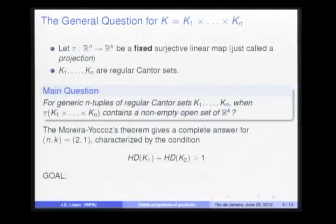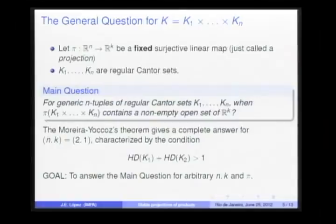Well, the Moreira-Yoccoz theory gives a complete answer for the case when n equals 2, k equals 1, characterized by the condition of the sum of the Hausdorff dimension bigger than 1. So, the goal is to answer this main question for arbitrary dimensions n and k and arbitrary projection π.